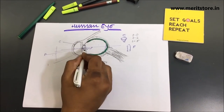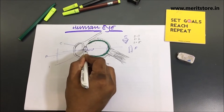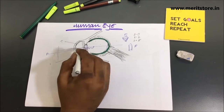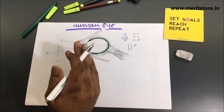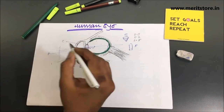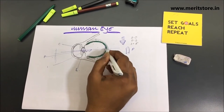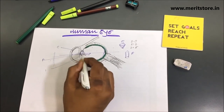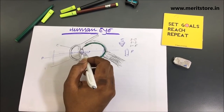That is because the human eye lens is constantly adjusting its focal length in order to accommodate every image you are seeing, so that it forms a clear inverted image on the retina. This self-adjustment of focal length is called the power of accommodation.